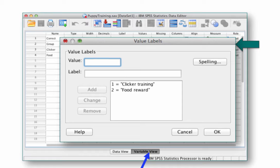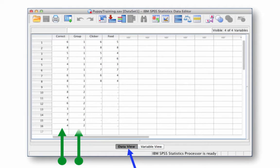If we now click over to data view, we can see that group has values associated with it. Let's click on values and see what they are. 1 equals clicker training, 2 equals food reward training. Now we know what 1 and 2 stand for in this variable. In our data view, we can see that we have 16 values. There are scale scores for correct, that's the number of tests that the puppy got correct, and what group the puppy belongs to, group 1 or group 2. Those are the only two variables that we're going to need for this independent samples t-test.